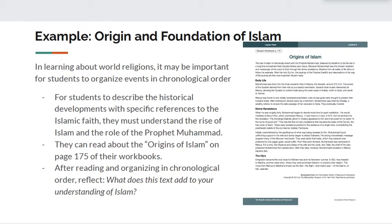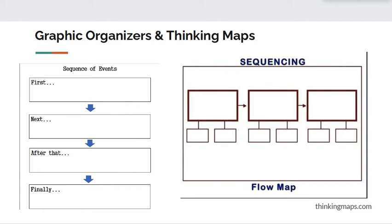For example, we have the Origin and Foundation of Islam lesson in this unit. In learning about world religions, it may be important for students to organize events in chronological order. For students to describe the historical developments with specific references to the Islamic faith, they must understand the rise of Islam and the role of the Prophet Muhammad. They can read about the origins of Islam on page 175 of their workbooks. After reading and organizing in chronological order, reflect: what does this text add to your understanding of Islam? Students can use graphic organizers or a sequence thinking map — a flow map — to help them visually arrange the information they have read in chronological order.